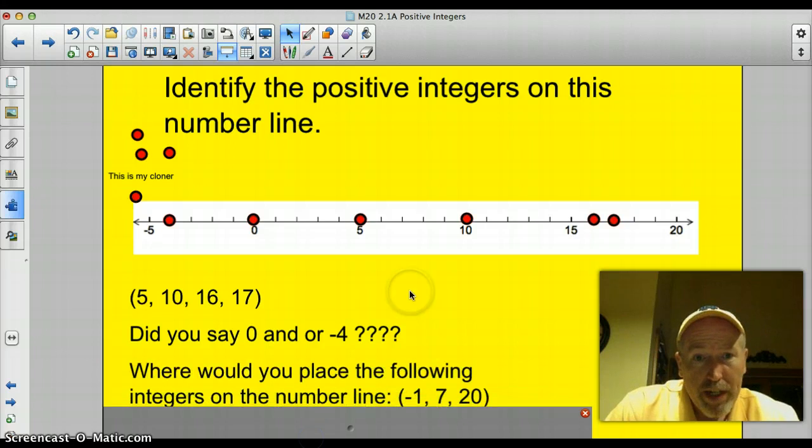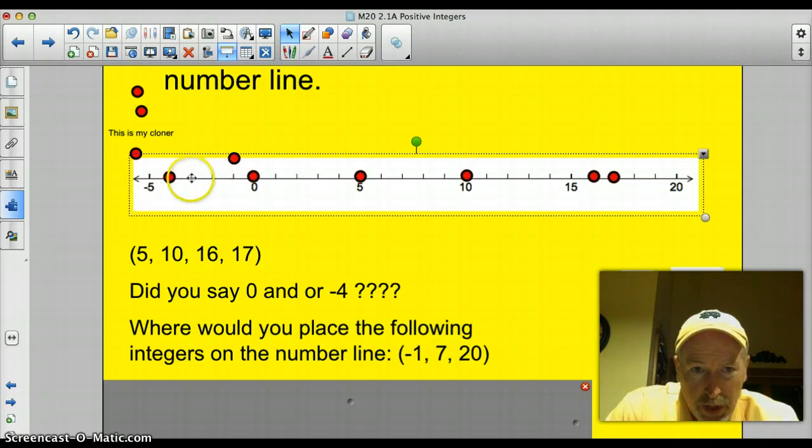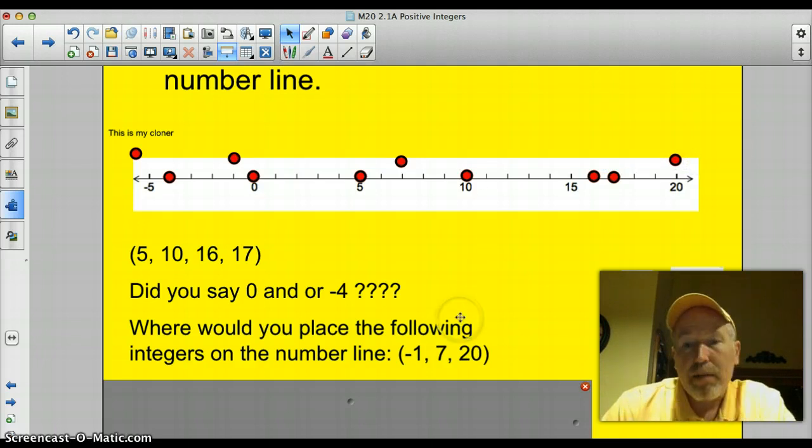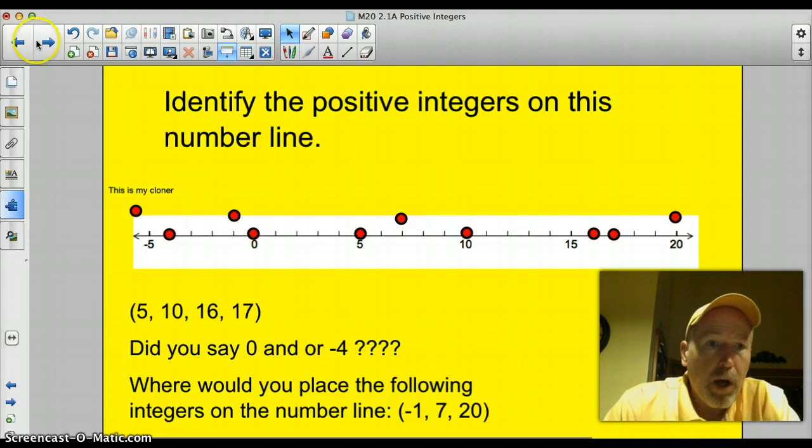Alright. I had those little red dots out there for a reason. Where would you place the following integers on the number line? Well, the negative one, we'll grab this little guy here and we'll put him right about here. That's negative one because here's zero. Negative one, negative two, negative three, negative four, negative five. Good. This one here is going to go at seven. So here's five, six, seven, and 20. Find a landmark here. How about 15, 16? Oh, there's 20 labeled right there. So I don't even have to count. And there I have placed numbers. So that's where you would place or graph positive integers on a number line.